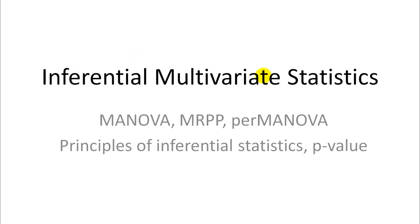This video covers inferential multivariate statistics. Rather than just looking at ordinations and dendrograms, we actually want to make some inferences on populations. Maybe we want to test differences between treatment means or particular groups of sample points. We already covered one technique that does this — multivariate analysis of variance — but there are actually better techniques that are distance-based and not rotation-based.